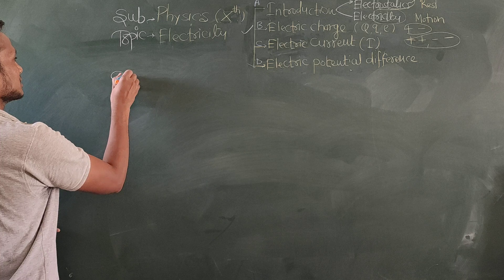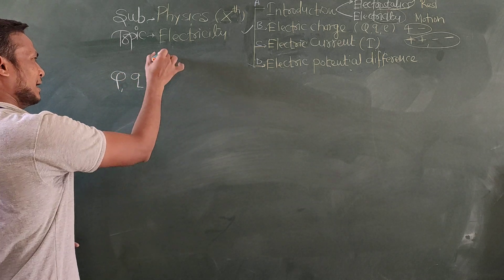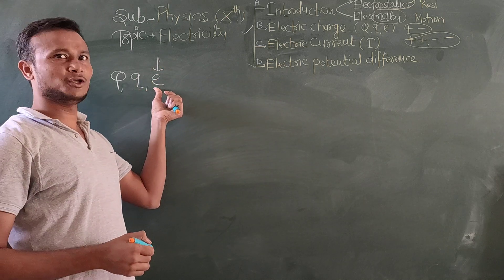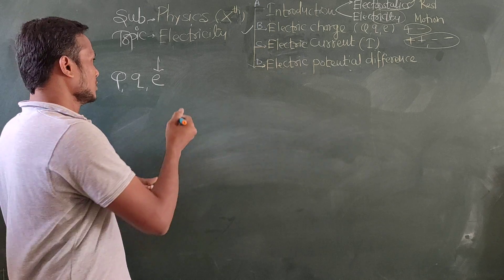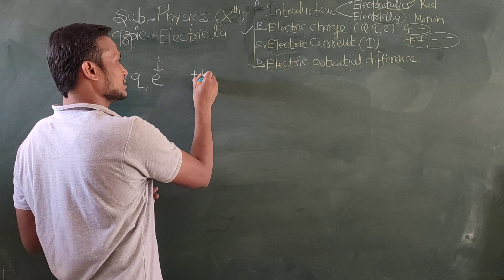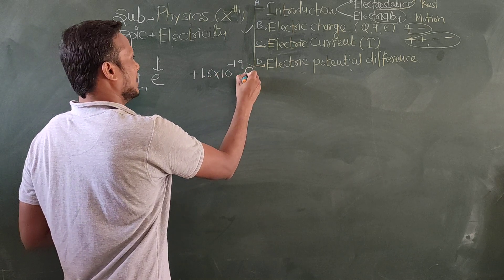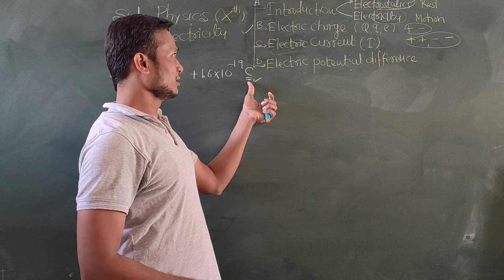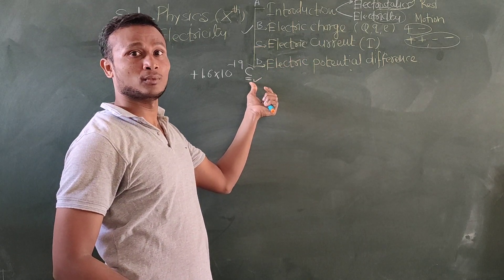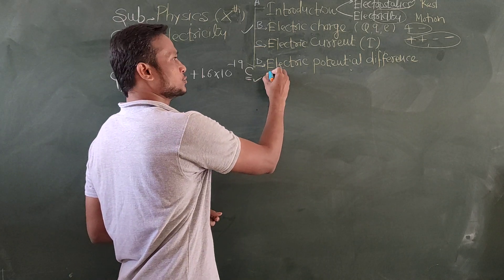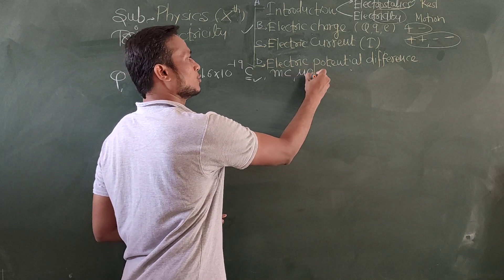The symbol for electric charge is Q, and sometimes we use small q, as well as e. Basically, small e is used to show the charge on a single electron or proton. The charge a proton carries is plus 1.6 × 10⁻¹⁹ Coulomb. Coulomb is the SI unit for the measurement of electric charge. If the charge is too small, we go for millicoulomb, microcoulomb, or nanocoulomb.